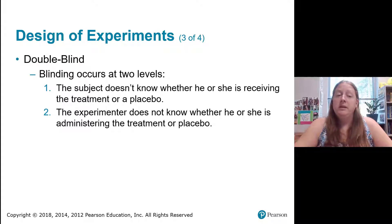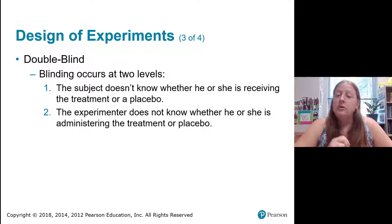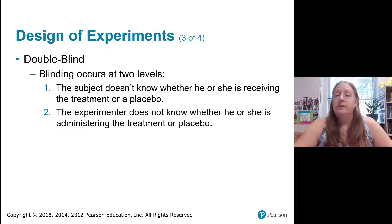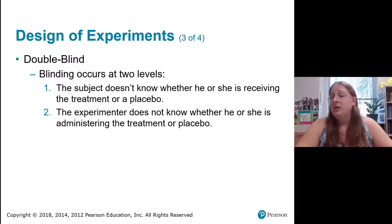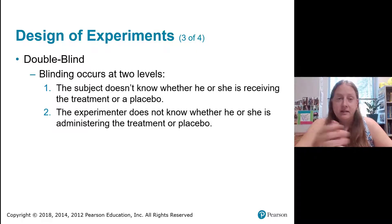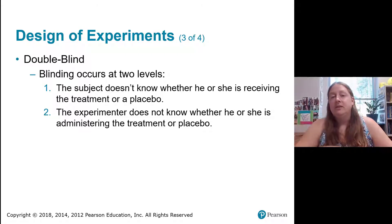In a double-blind study, the subject doesn't know whether they're receiving a treatment or a placebo, and the experimenter also doesn't know whether they're giving the treatment or the placebo. For example, with a medication given through injection, the person completing the injection doesn't know whether the syringe contains saline or the medication — and neither do the subjects. Only the people conducting the statistical analysis know.